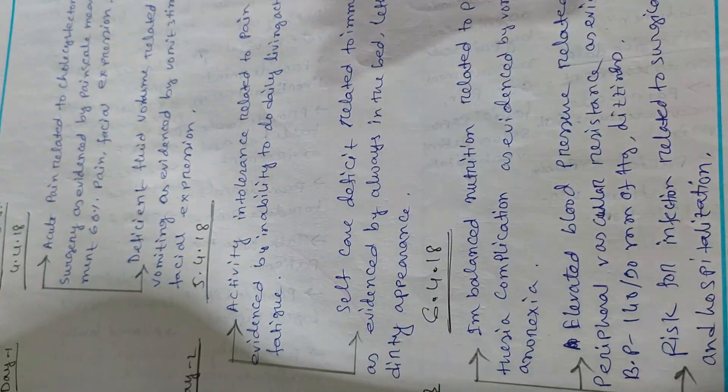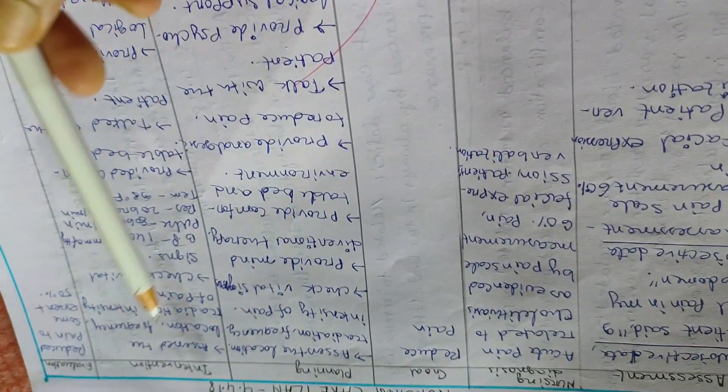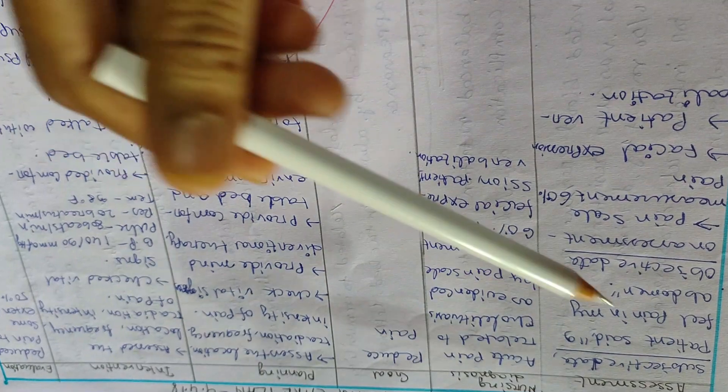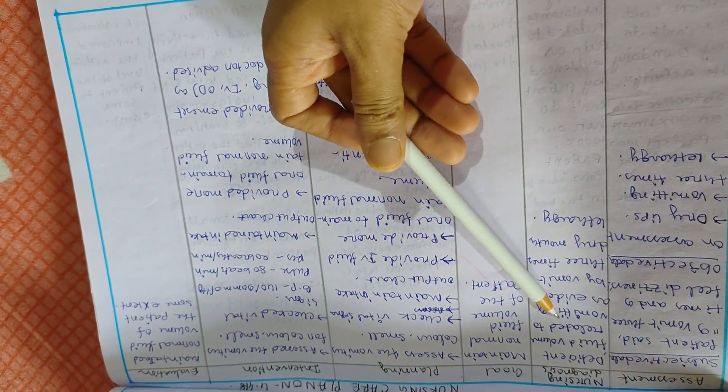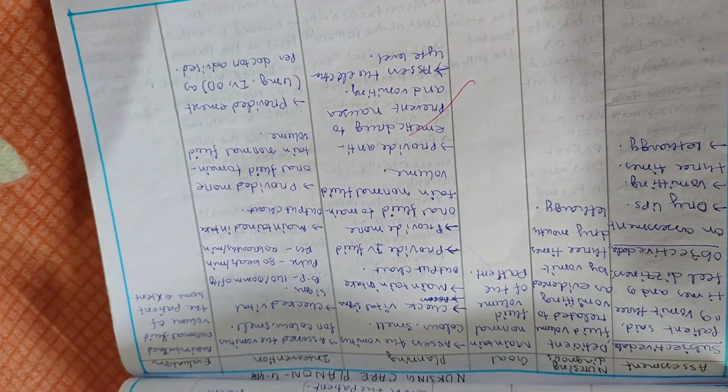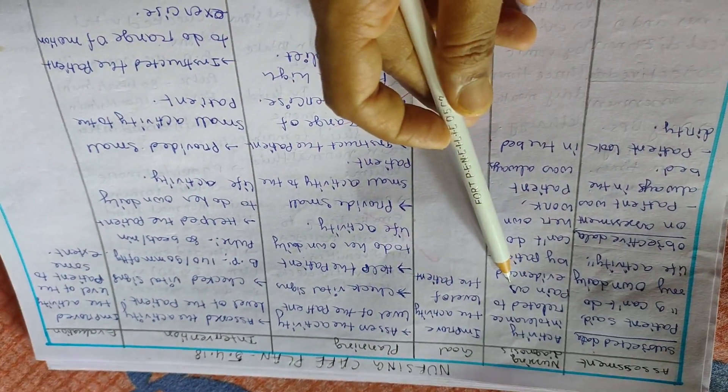For each nursing diagnosis, the format should follow: assessment, nursing diagnosis, goal, planning, intervention, and evaluation. All nursing diagnoses — including deficient fluid volume, activity intolerance, and self-care deficit — should be explained according to this nursing care plan format, completed day by day.